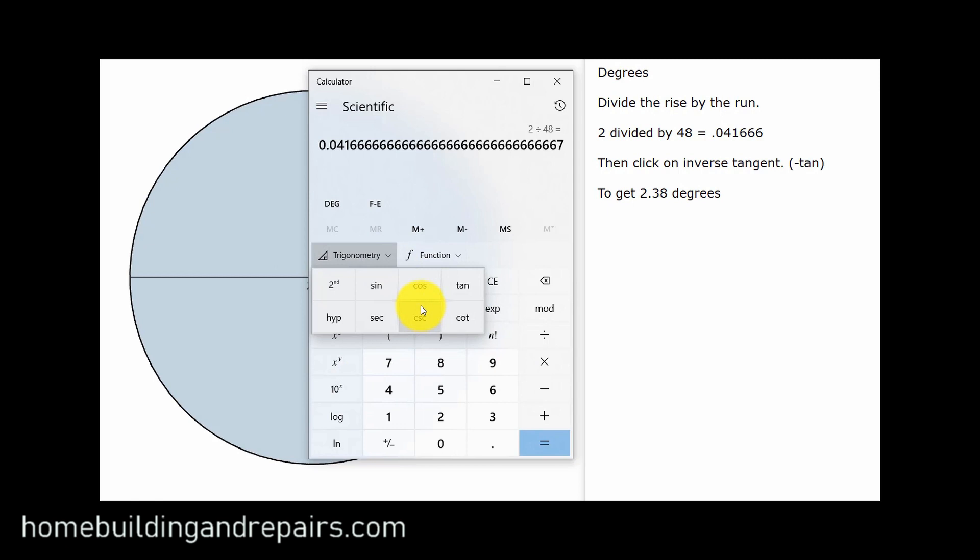Now the only difference here is we've got to find the inverse tangent key, and that's going to be located on this particular calculator. And here's the tangent, but we need to click on this to get to the inverse tangent. And once I click on this, it's going to give me the degrees of that particular slope, 2.38, or you could round it off to 2.39 since that is a 5.